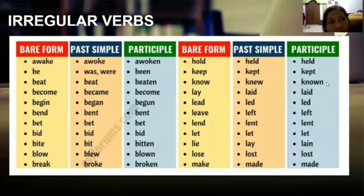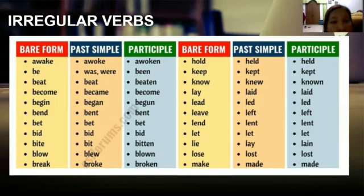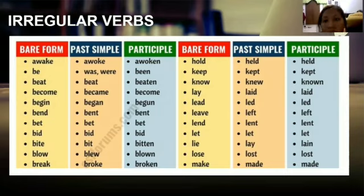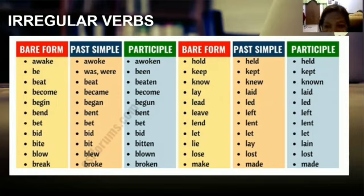This table shows irregular verbs from bare form to past simple to past participle. Examples include: awake/awoke/woken, be/was-were/been, beat/beat/beaten, become/became/become, begin/began/begun, bend/bent/bent, blow/blew/blown, break/broke/broken, keep/kept/kept, lay/laid/laid, lead/led/led, let/let/let, lie/lay/lain, make/made/made.